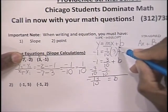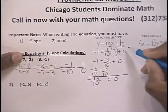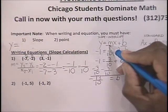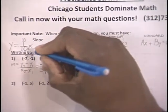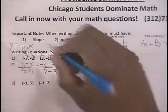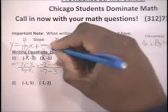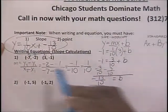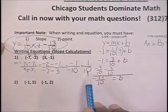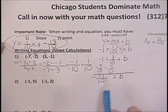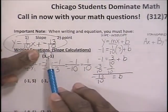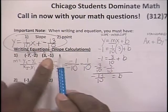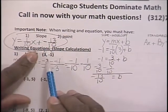Now you have everything you need to write the equation. Substitute the slope m and the y-intercept b: the equation is y equals 1/10 x minus 13/10. That's the final answer. To write this equation, we found the slope first, then calculated the y-intercept using one of the given points — use either point, but not both.